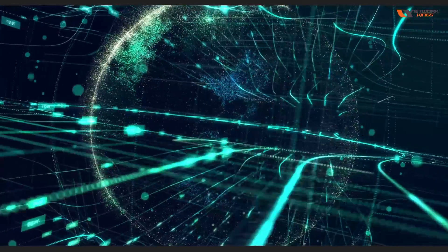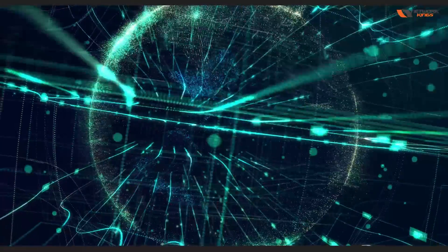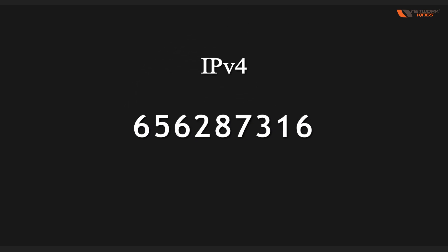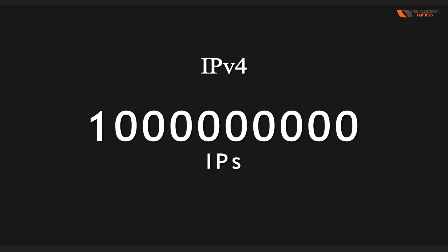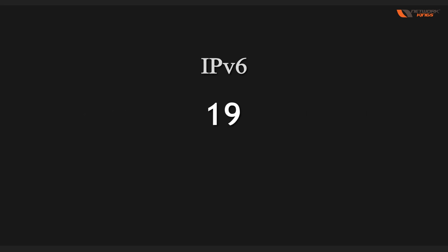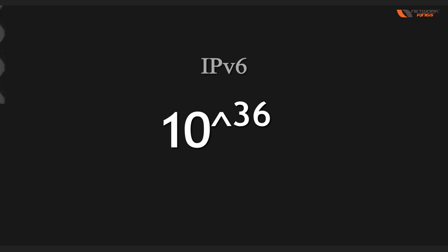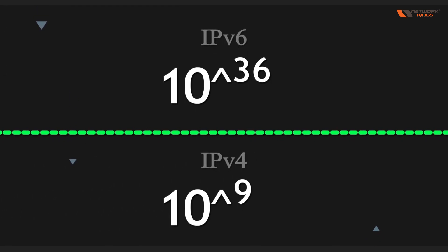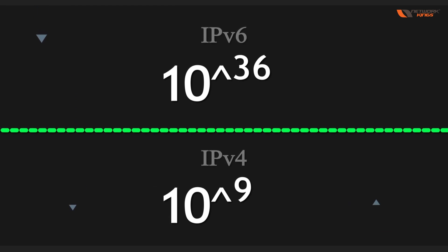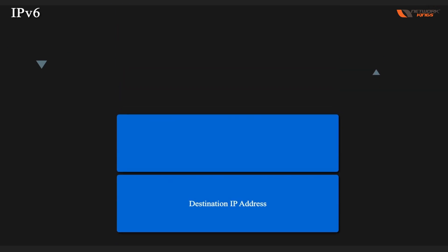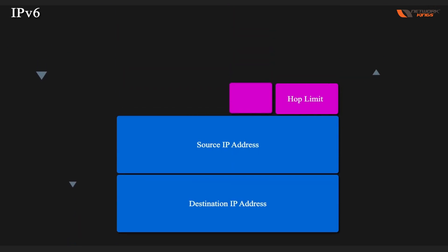An IP address is a very big number and it comes in two variants. IPv4 is 32-bit, which gives around 4 billion addresses — but this is almost exhausted. IPv6 has almost 340 billion billion billion IP addresses; you can't even count that. It's a very big number — some people call this an undecillion.